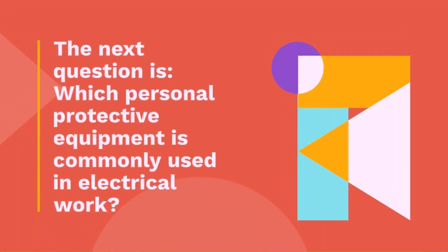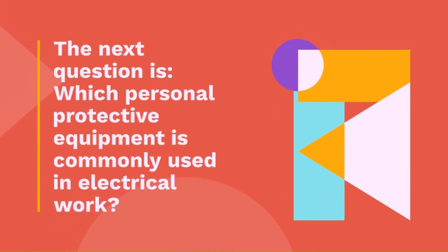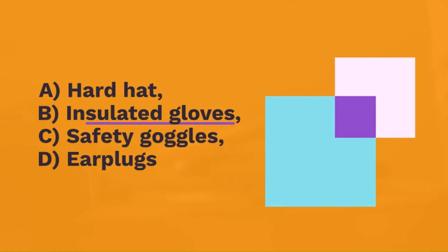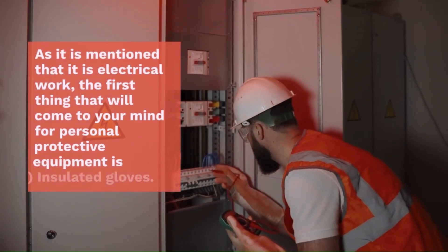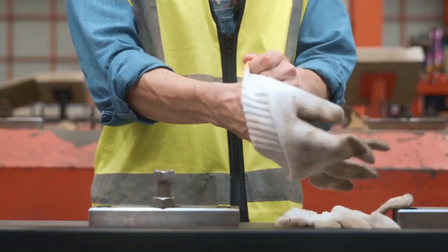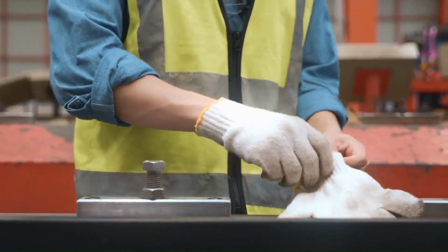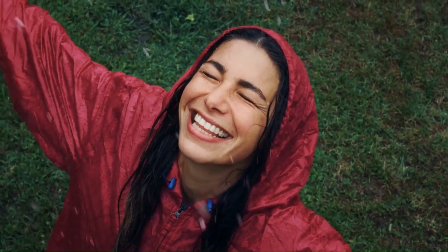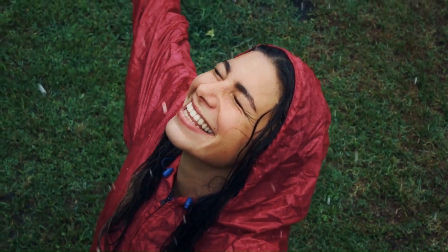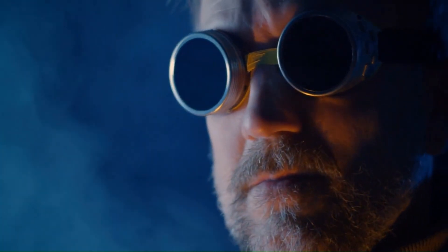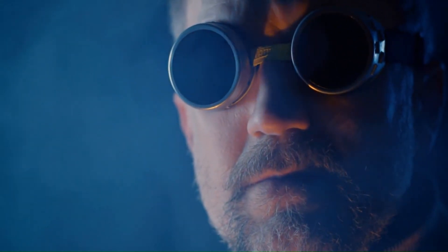Question 6: Which personal protective equipment is commonly used in electrical work? A — hard hat, B — insulated gloves, C — safety goggles, D — ear plugs. Since it is electrical work, the answer is insulated gloves. Insulated gloves protect you from electric shocks, just like how a raincoat protects you from getting wet in the rain. PPE is your last line of defense — make sure you are wearing the right gear for the right job.